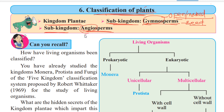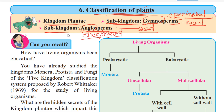Angiosperm — 'angio' means closed or covered, and 'sperm' means seed. So angiosperm means seeds that are closed or covered, meaning the seeds are enclosed within fruits. These seeds are included under sub-kingdom Angiosperm.